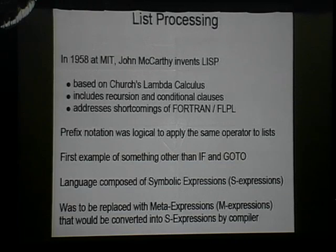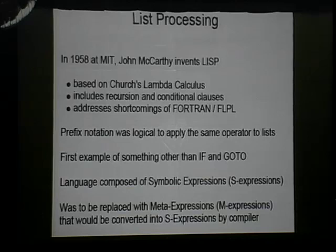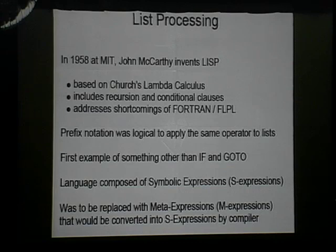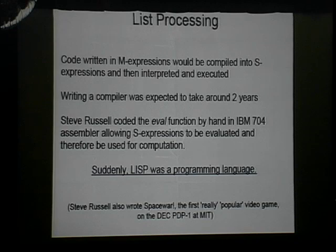LISP was not designed right away as a programming language. It was supposed to be a way to axiomatize mathematics — to write expressions and prove them mathematically. The S-expressions were supposed to be a lower form that you'd write in meta-expressions, which the compiler would change into S-expressions, and then into machine code. The project timeline was about two years to get a working compiler, until Steve Russell realized he could code up the eval function on the IBM 704. Once he coded that, it was able to actually evaluate S-expressions into values, and suddenly we had a programming language. Note: Steve Russell also wrote Space War.